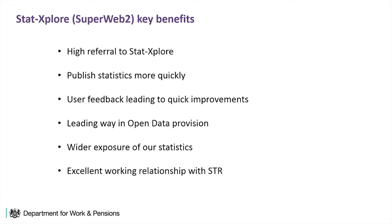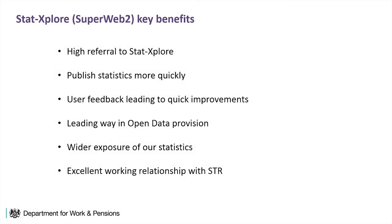Some of the key benefits: we now refer to StatExplore extensively. If we get a Freedom of Information request or a parliamentary question and that data is available in StatExplore, we tell the MP or their researcher to go away and get those statistics themselves. We can also publish statistics more quickly. We used to publish benefit statistics that were about five months out of date by the time they were published. For Universal Credit, the claims-made figure is less than a week out of date by the time we publish it. As a government department in the UK, we lead the way in open data — and that's particularly because of StatExplore.